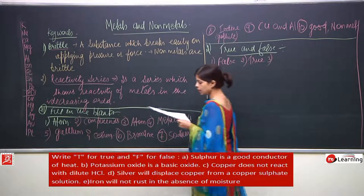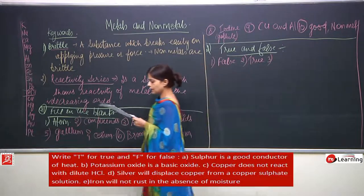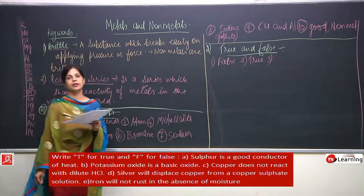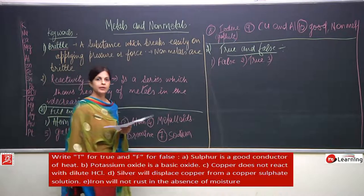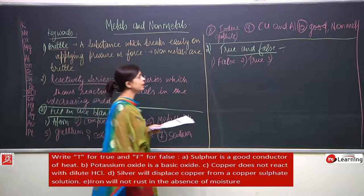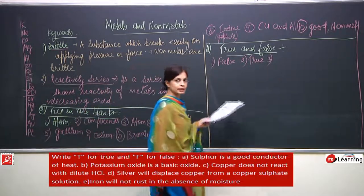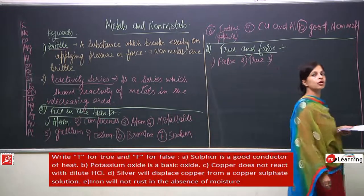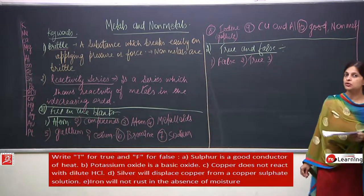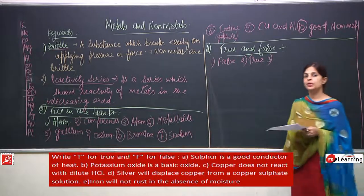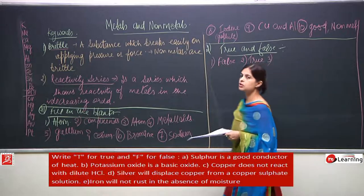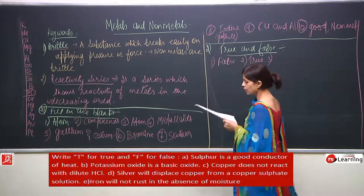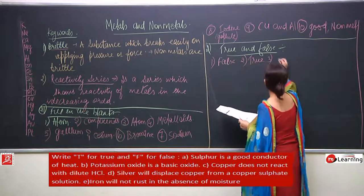Third: copper does not react with dilute hydrochloric acid. This is very true — we have done this. In solving the NCRT, copper + H₂SO₄ gives CuSO₄ + H₂ gas liberated. The answer is true.